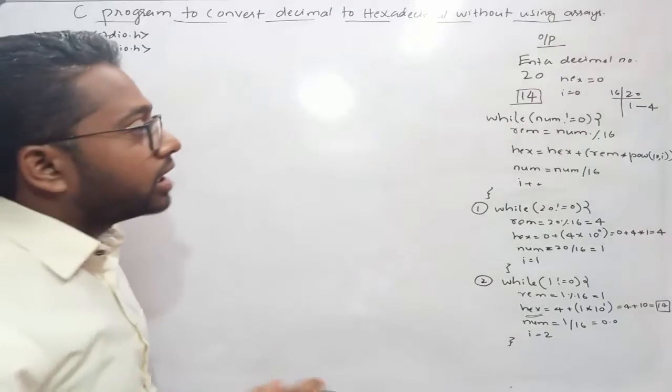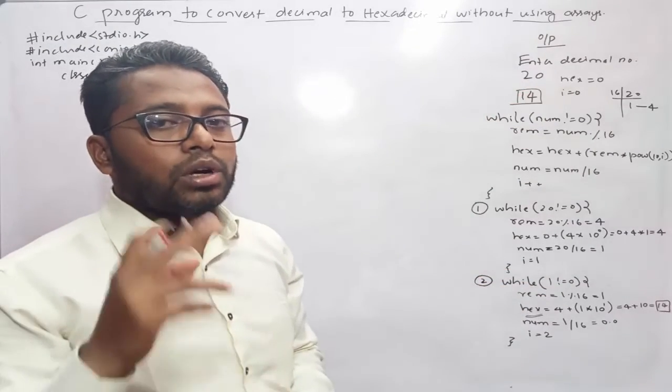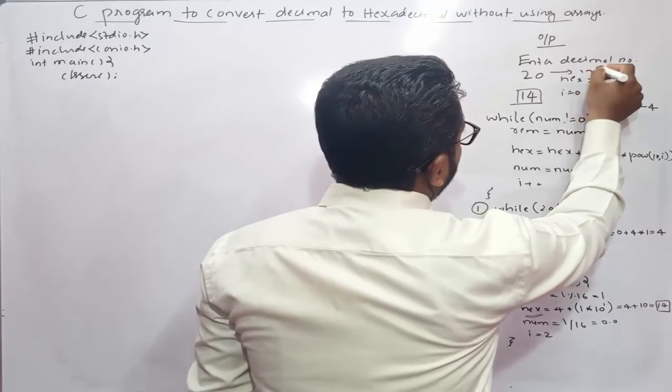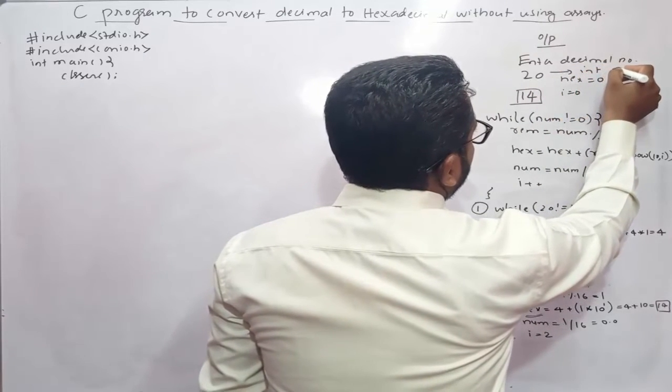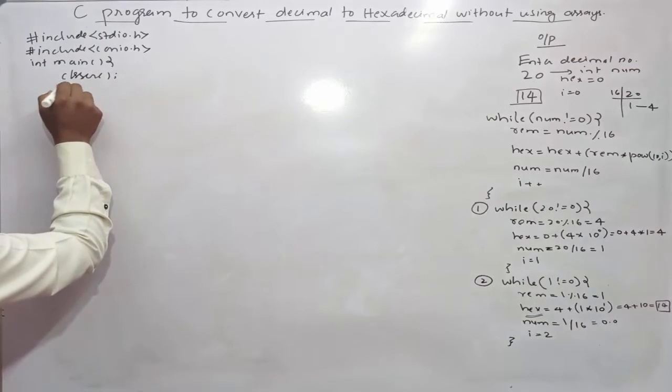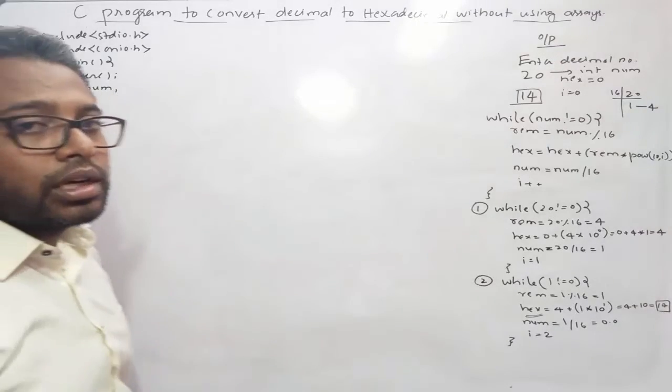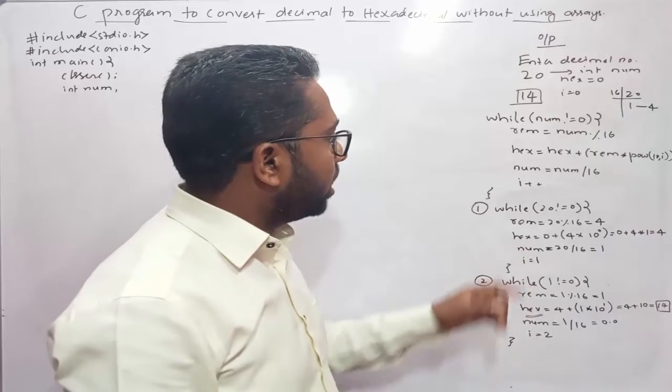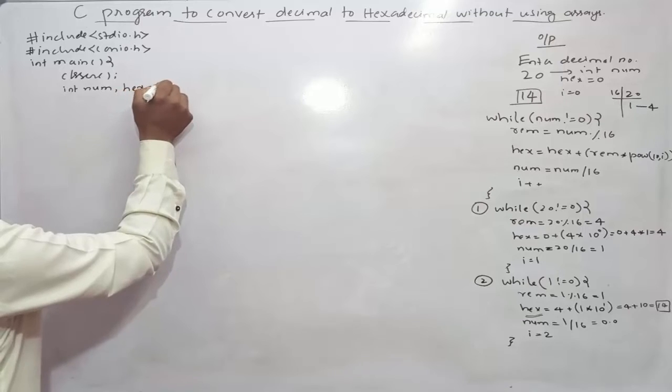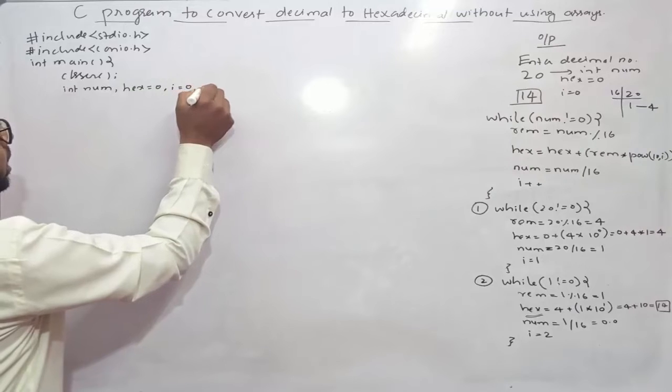On screen, now I need to declare the variables. Since this program is expecting one value to be entered by the user, to store this value 20 I need to create one integer variable, let's say num. And I need to store the hexadecimal value in the program, so to store that value I need to create hex variable, hex equals 0.